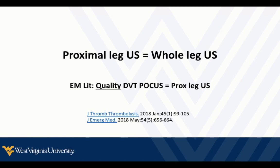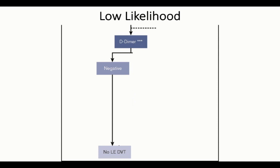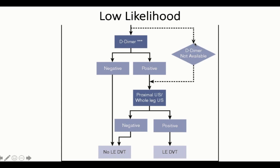Rather than a strict two-point or three-point ultrasound, I recommend ensuring you hit the three key junctions while following the deep veins as far as feasible in the proximal leg. For decision-making, divide patients into low, moderate, or high likelihood for DVT. The recommended algorithm suggests doing a D-dimer; if negative, you're done — no ultrasound needed. If the D-dimer is not available or you've decided not to wait, move directly to the proximal or whole-leg ultrasound.